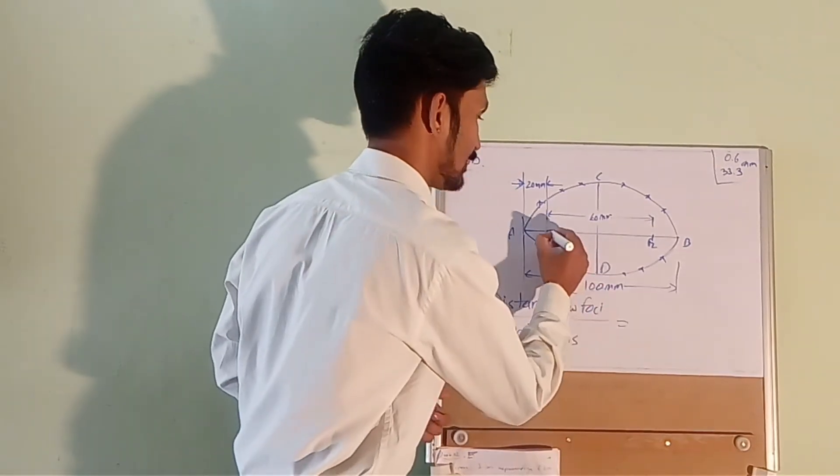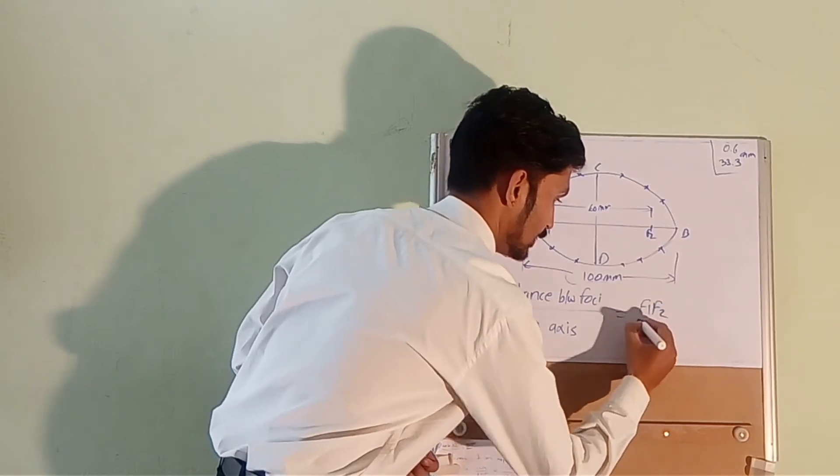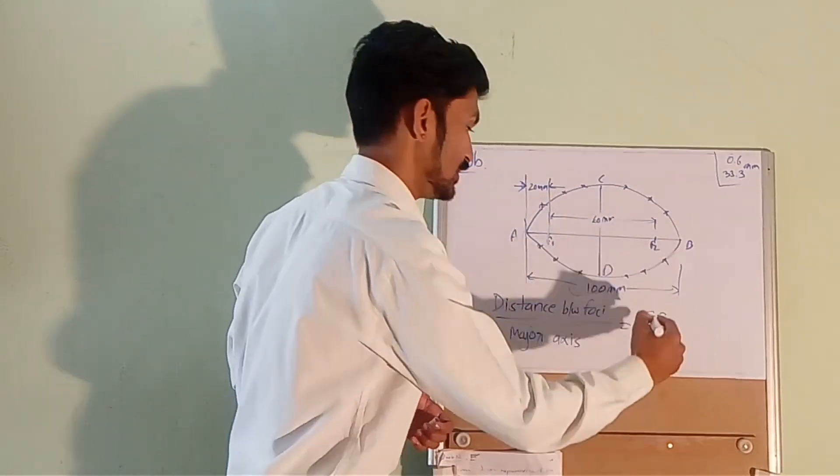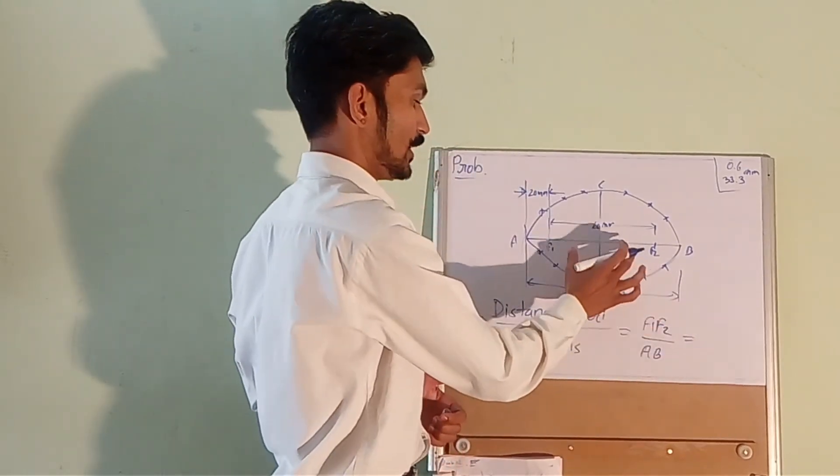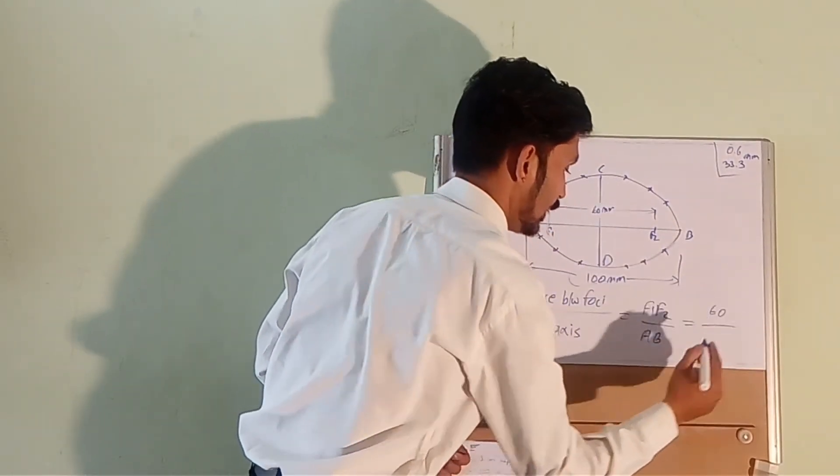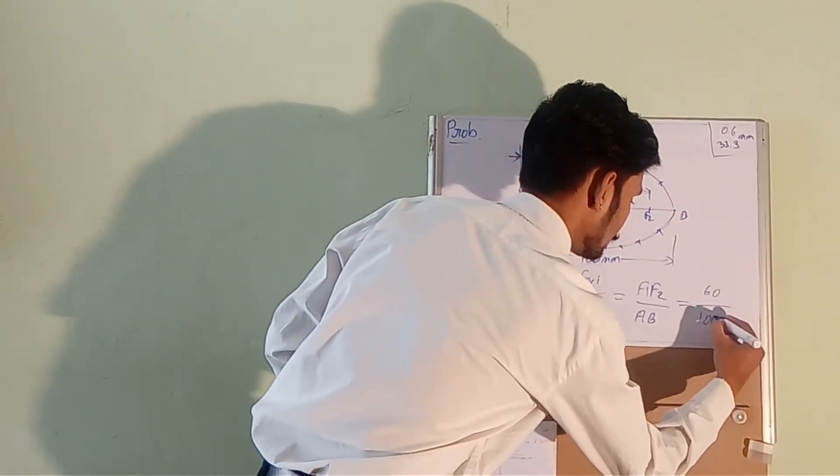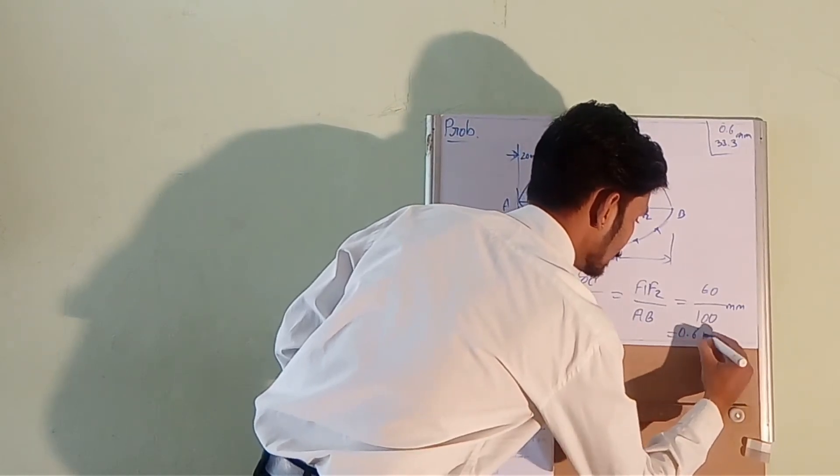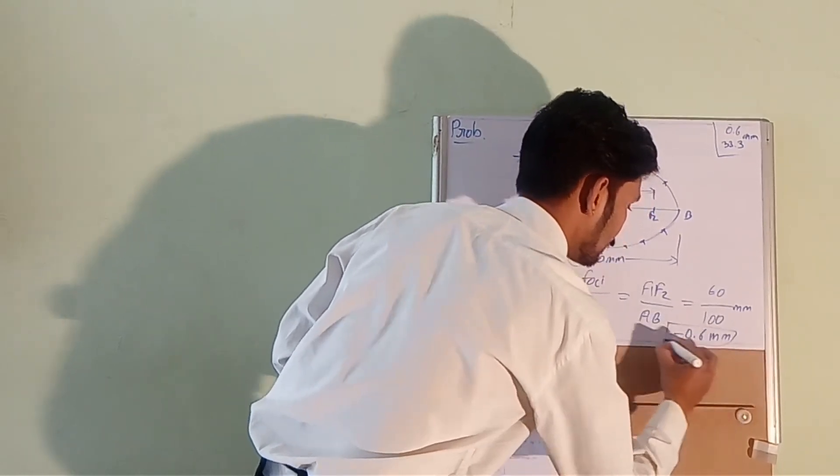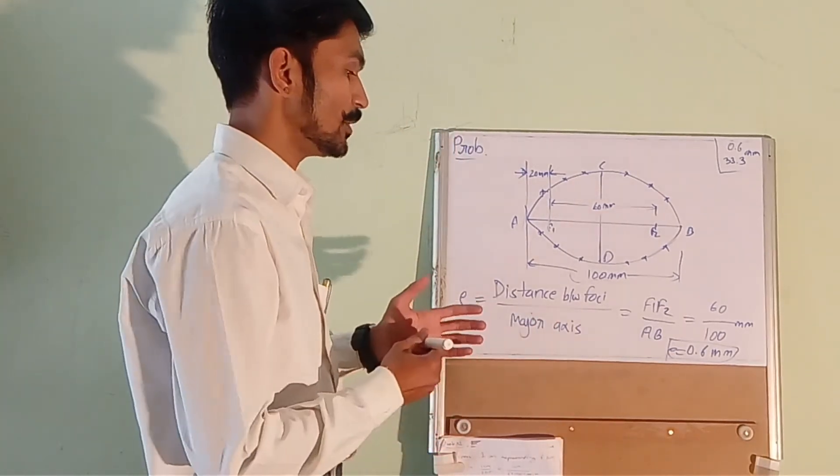So distance between foci is F1F2 and the major axis is AB. Distance between F1 and F2 is 60 mm and AB is 100 mm. So this will be 0.6 mm. So eccentricity is equal to 0.6 mm.